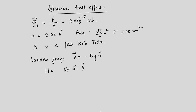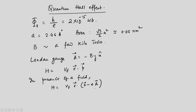This Hamiltonian in the presence of a field transforms as p → p − eA. This is the standard prescription called Peierls coupling, and this is how the momentum transforms.